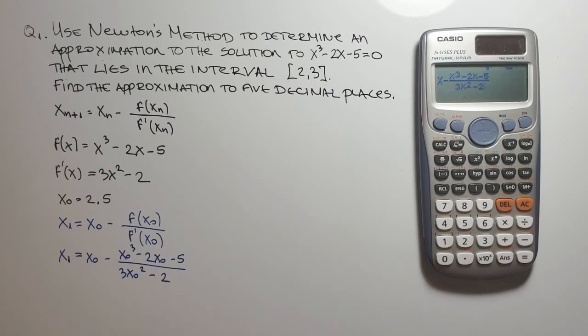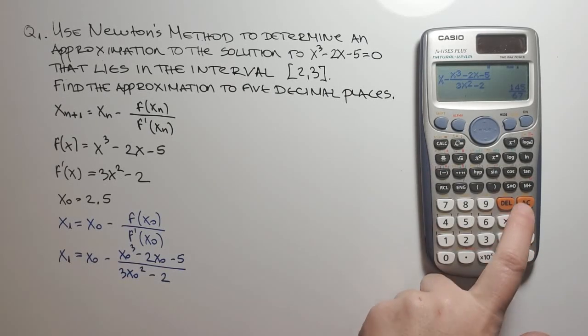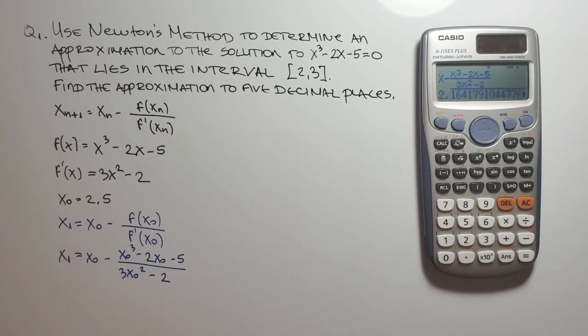So now I have my expression here on the calculator and I press the calc key. The calculator asks for the value of the x variable. We have this value, it is 2.5. So I insert 2.5 and now I press equal and here it is, my first approximation. You can press this key here to see it in decimals. So we have x sub 1 equals 2.164179104.